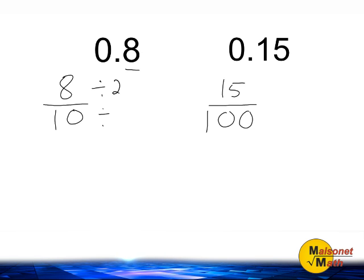And 8 divided by 2 is equal to 4. And 10 divided by 2 is equal to 5. So we would say that 0.8 or 8 tenths, expressed as a fraction in simplest terms, is 4 fifths.